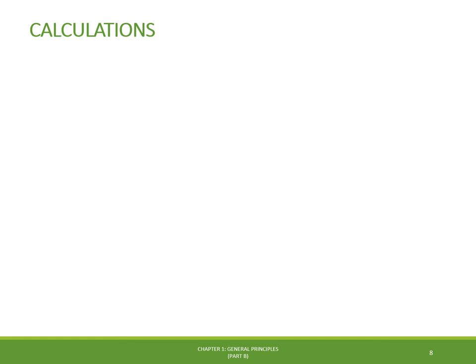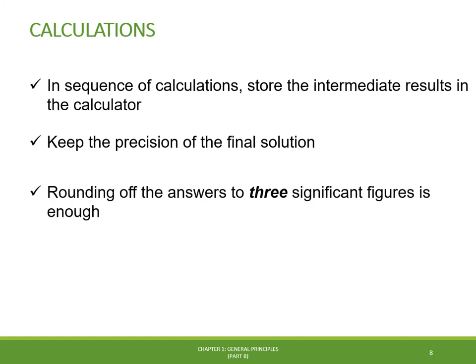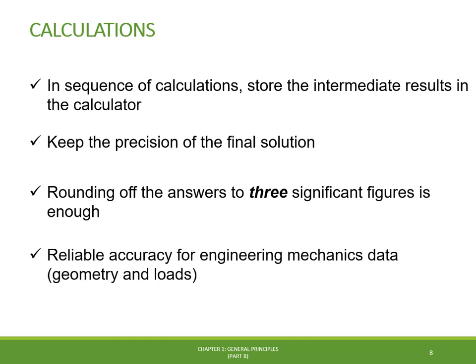Here are some useful recommendations for performing calculations. When executing a sequence of calculations with multiple operations, it is best to store intermediate results in calculator memory without rounding them, and round off only the final answer — this preserves precision. Most scientific calculators available to engineers have a memory function. Also, always round off answers to a maximum of three significant figures, which maintains reliable accuracy for most engineering mechanics data such as geometry and loads.